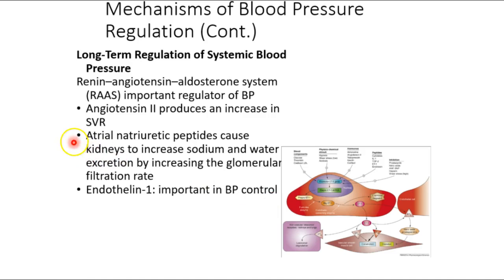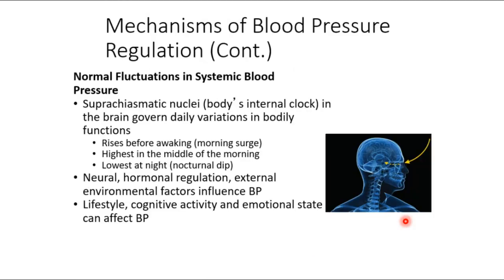RAAS raises blood pressure; ANP does the opposite by making you urinate more. Endothelin-1 is actually a potent vasoconstrictor — I want to correct that. Nitric oxide is a gaseous hormone that causes vasodilation. I was mixing those up: endothelin-1 is a vasoconstrictor, nitric oxide is a vasodilator produced by blood vessel walls.